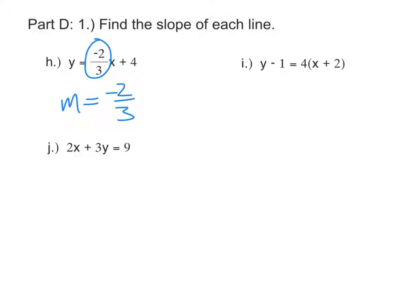If it's in point-slope form, again, the slope is just sitting there in the equation. So the slope is 4.